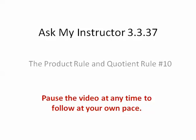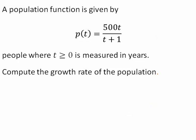Ask My Instructor 3.3.37. A population function is given by p of t equals 500t divided by t plus 1, where p represents people and t is measured in years. Compute the growth rate of the population.